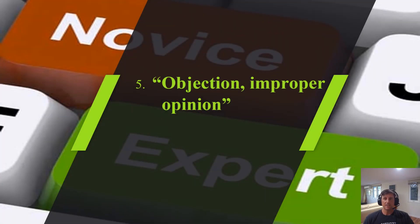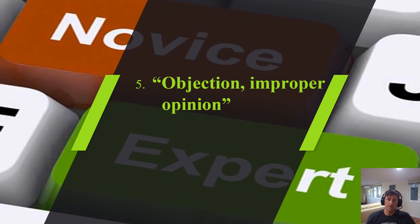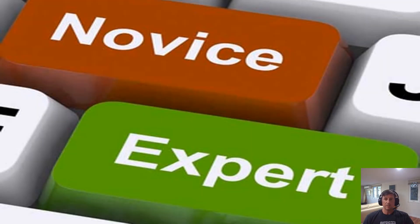The last objection is objection improper opinion, which I've elevated as an important evidentiary objection under Article 7. Many mock trial fact patterns have expert witnesses, law enforcement, or hybrid witnesses with some specialized knowledge. There are really two types of witnesses as it relates to this objection: lay witnesses, who have personal knowledge of something at issue in the case — like a bystander on a corner who observed a car accident — and expert witnesses.